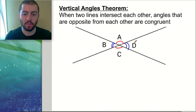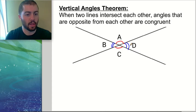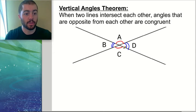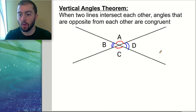So this is what the vertical angles theorem tells us — we have two straight lines that intersect, and when we have two intersecting lines we form four angles, and the opposite angles are congruent to each other. Angle B and angle D are congruent, angle A and angle C are congruent. Whenever you see intersecting lines like this you want to think of the vertical angles theorem; it's going to be useful when we go to do proofs.